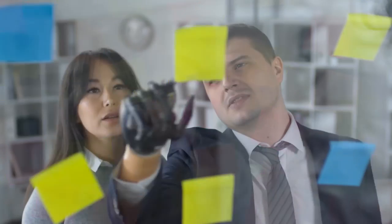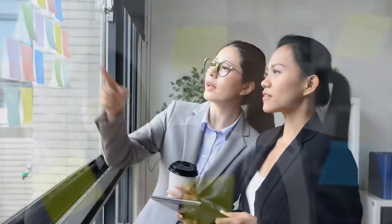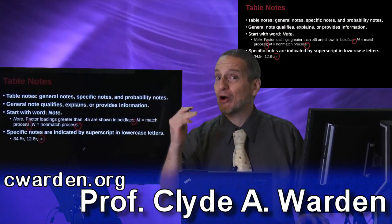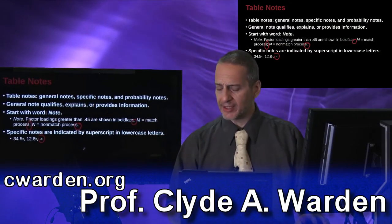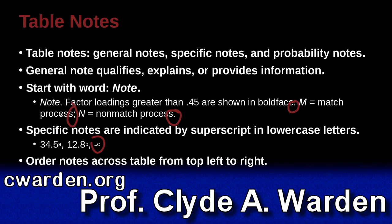And so then we look at the bottom of the table where the note is, and down at the note we're going to say, what does a mean? What does b mean? What does c mean? We put all of that into the note. Another great way to save a lot of space in your table.